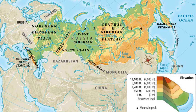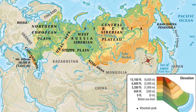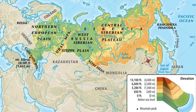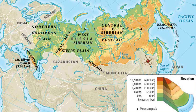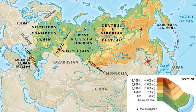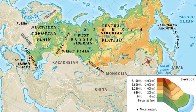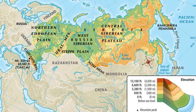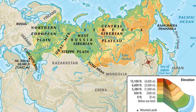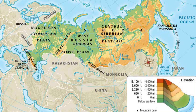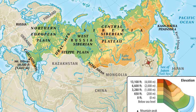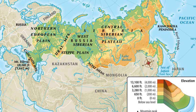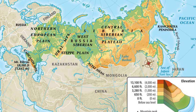Russia stretches across two continents, Europe and Asia. It's 6,200 miles wide at its extent. It stretches through 11 time zones, nine mountain ranges. It borders 13 seas, three oceans, and 14 other countries. Hence, Russia is huge.